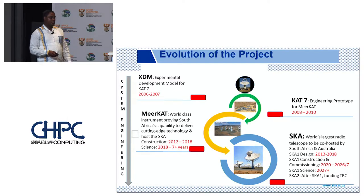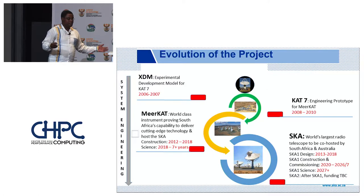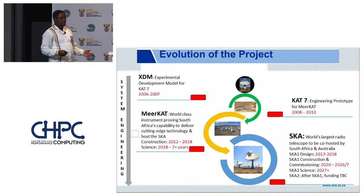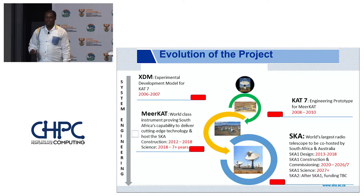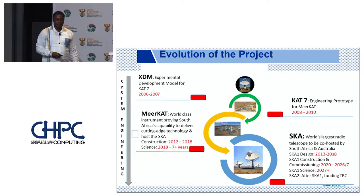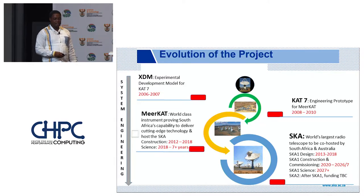Then somebody said, we need more than KAT-7 — what are we going to call it? Well, 'meer' is Afrikaans for 'more.' So we ended up with MeerKAT, the name of a 64-antenna interferometer with an eight-kilometer baseline.